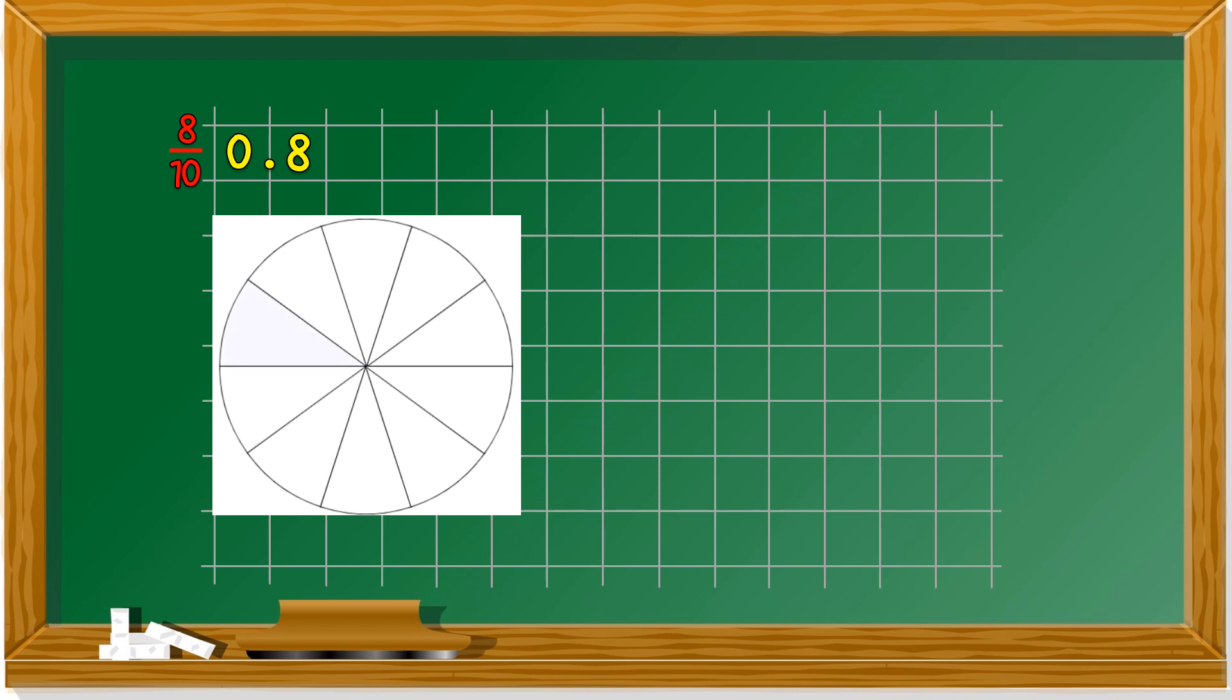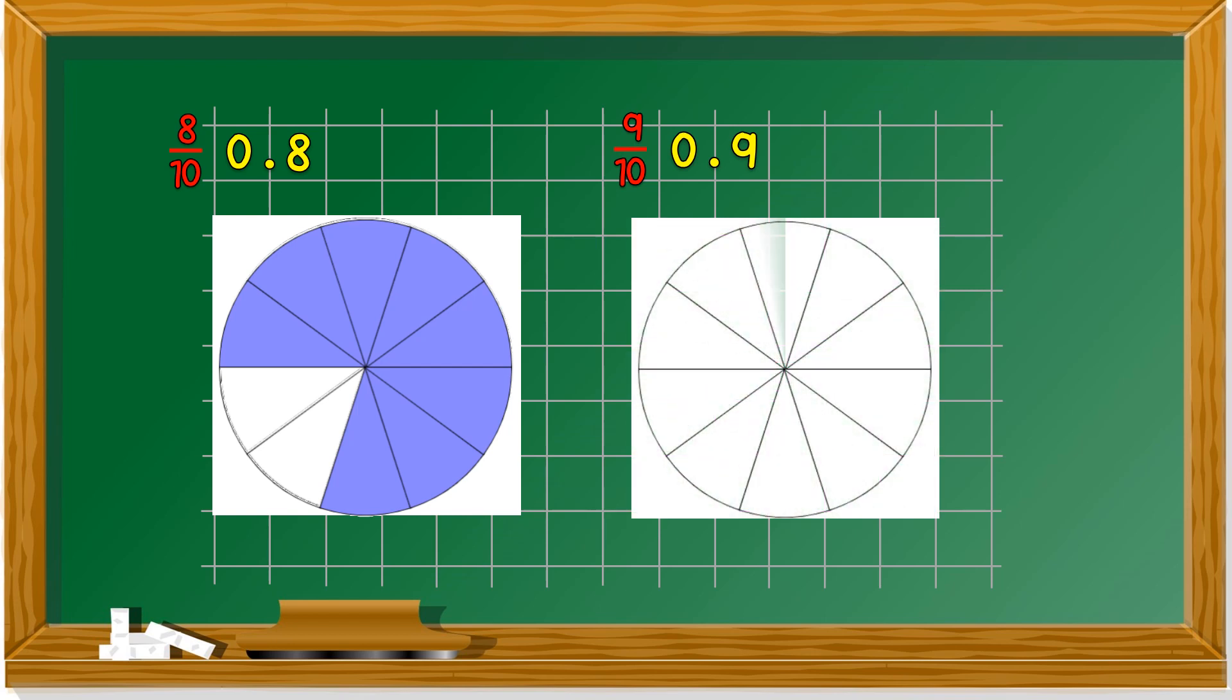So let us count: 1, 2, 3, 4, 5, 6, 7, 8. 8 parts. So this is 0.8. Let's take a look at 0.9. The fraction is 9 over 10. If we use the same round diagram, make sure you divide it equally into tens and color how many parts? 9. 1, 2, 3, 4, 5, 6, 7, 8, 9. Only one part left that is not colored.